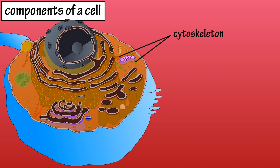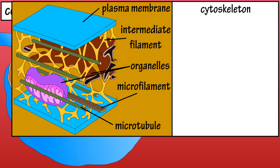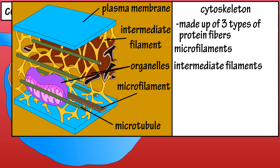The cytoskeleton is the internal framework of a cell, providing structural support and allowing the movement of materials. It is made up of fibers that form a kind of scaffolding, which are made up of protein molecules. There are three different types of fibers: microfilaments, intermediate filaments, and microtubules.